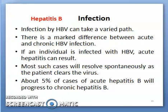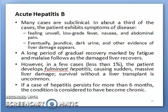Hepatitis B has two further categories based upon the infection: acute hepatitis B and chronic hepatitis B. In acute hepatitis B, many cases are subclinical. In about a third of cases, the patient exhibits symptoms of the disease, including feeling unwell, low-grade fever, nausea, and abdominal pain.